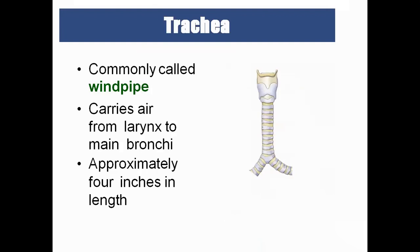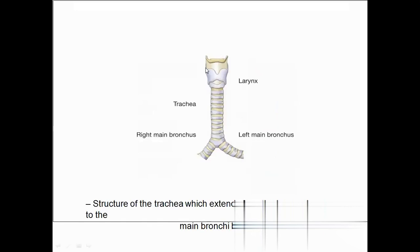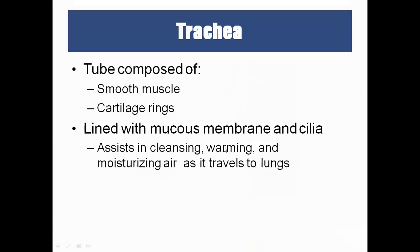The trachea, or windpipe, extends from the larynx and is encircled by cartilaginous rings to prevent it from collapsing. It is about 4 inches in length and is composed of smooth muscle and cartilaginous rings lined with mucus membrane and cilia. The trachea divides into the right and left main bronchi.